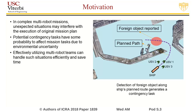During complex multi-robot missions, unexpected situations may arise requiring the execution of contingency tasks to ensure that the mission is completed successfully. In the figure, a ship is being escorted at a port by a team of unmanned surface vehicles so that it docks successfully. If the team learns of an obstruction in the ship's path, a contingency task is created requiring the USVs to clear the path before the ship arrives at that location.